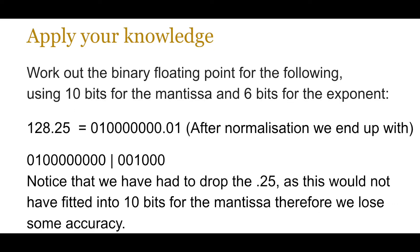Let's look at another worked example using 10 bits for the mantissa, 6 bits for the exponent, and the value 128.25. The 128 is easy - just a 1 in the 128 column and the rest are zeros. The 0.25 is also easy because it's 0.01, which is a quarter. Now this is not normalized because the binary point is to the right-hand side, so we need to shift it towards the sign bit. After normalization it's moved 8 places to the left, so the exponent becomes 8. However, when you put these new values into the 10 bits for the mantissa, the last remaining 1 has to be dropped, meaning we lose accuracy - and that's where allocating the right amount of bits for mantissa and exponent becomes crucial.